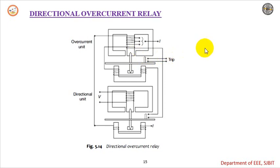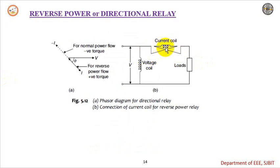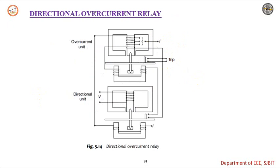One thing to remember is that under normal power flow direction, the torque produced will be negative, and under opposite power flow, the torque produced will be positive. To achieve negative torque during normal power flow, the current coil connection is arranged accordingly. That is about the directional or reverse power relay.